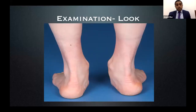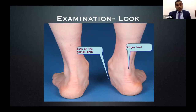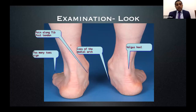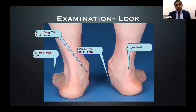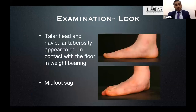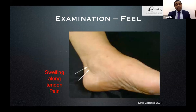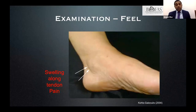On examination, you have valgus heel, loss of medial arch, pain along the tibialis posterior tendon, and the too-many-toes sign. Because the forefoot is abducted and pronated, you see too many toes from behind. When looking from the side, the navicular tuberosity sags and almost touches the ground, and you cannot insinuate your finger under the arch. You may also palpate thickening, synovitis, and tenderness along the tibialis posterior tendon and deltoid ligament.